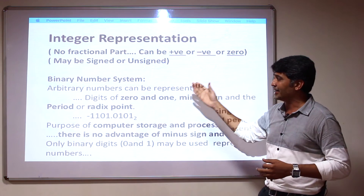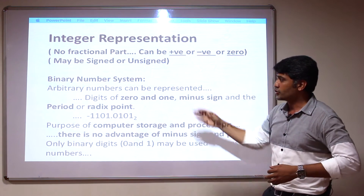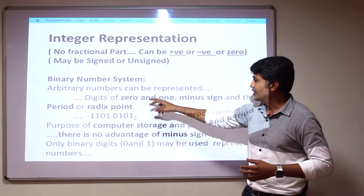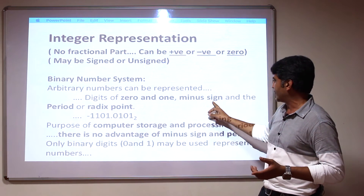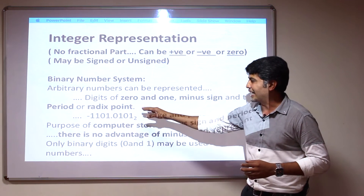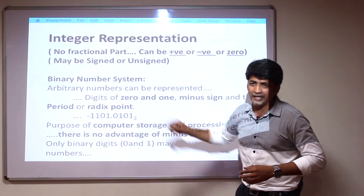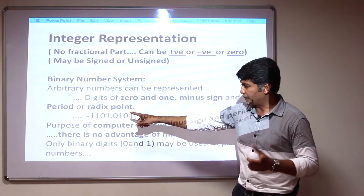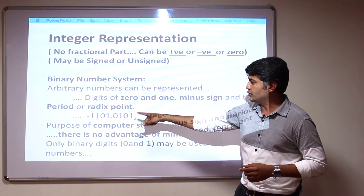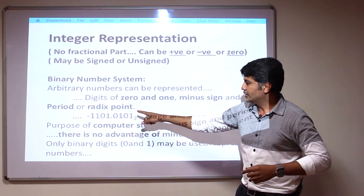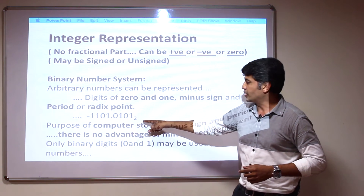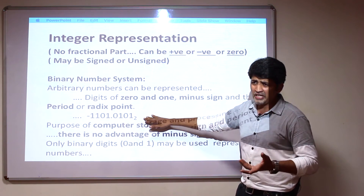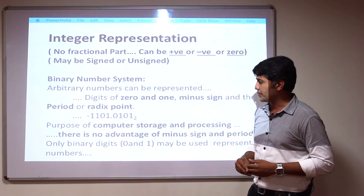What is meant by the binary number system? Arbitrary numbers can be represented using the digits 0 and 1, a minus sign, and a period — that is the radix point. An example of a binary number representation is: minus 1101.0101 in base 2. This is the basic representation for the binary number system.